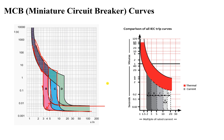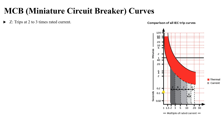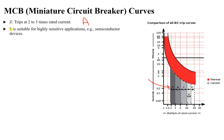Looking at all types according to IEC — Z, B, C, D, and K — each has its own operating range. Type Z trips very fast at 2 to 3 times the rated current and is used for highly sensitive applications such as semiconductor devices. Similarly, type A also trips at 2 to 3 times the rated current and is used for highly sensitive applications. Both Z and A are used for highly sensitive applications.